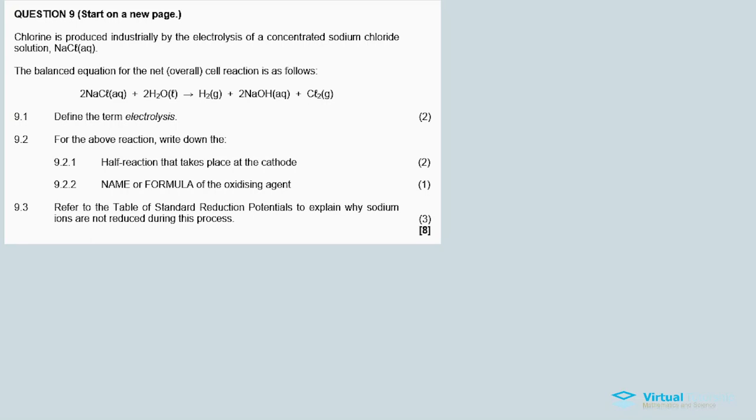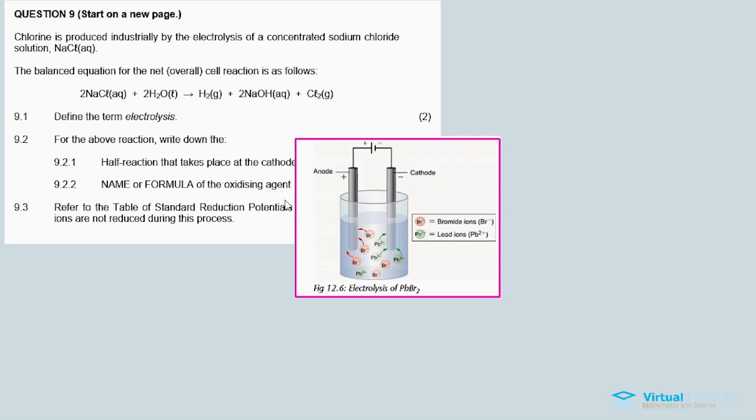Okay, let's say the balanced equation for the net or overall cell reaction is as follows. It's kind of interesting, but I don't know if I have a diagram showing the actual cell. But this time around, we see a balanced chemical equation for the cell. I'm going to point one, define the term electrolysis. Right, now, so I'm sure I have a picture of electrolysis like this one here.